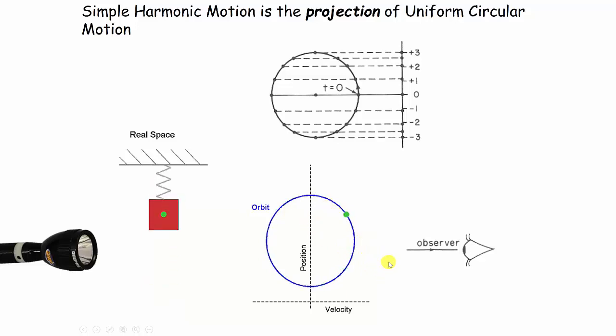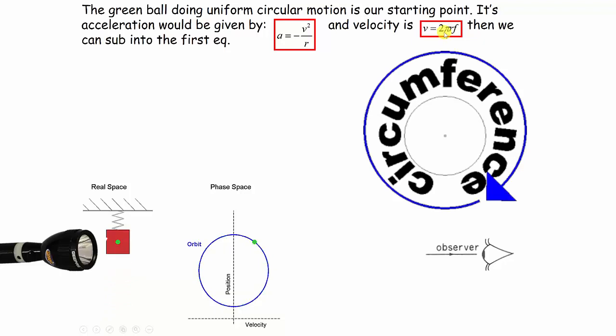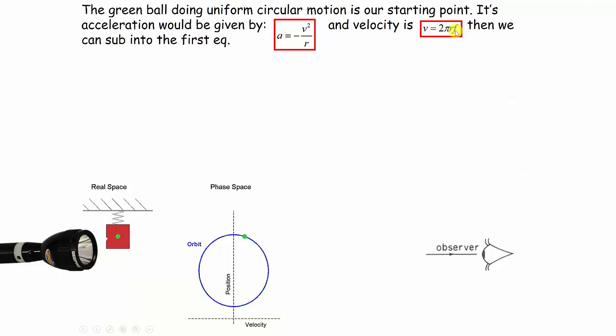In circular motion, if we just consider the green ball doing circular motion, its acceleration will be given by a equals v squared over r. Its instantaneous velocity at any point would be 2πr, which is the distance it travels in the time period, multiplied by f, which is 1 over T. So really we've just got 2πr over T.